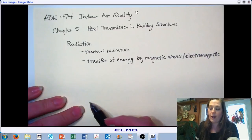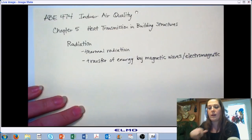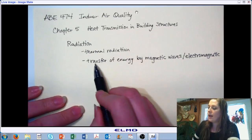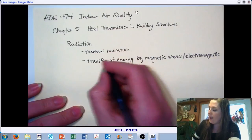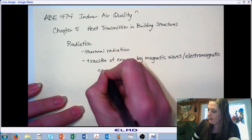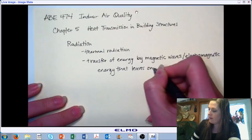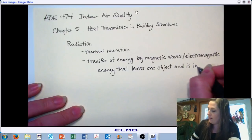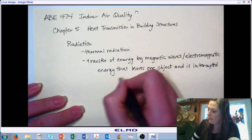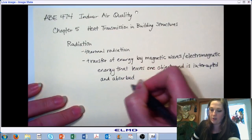We have radiation transfer that happens from the sun to our structure, from the atmosphere to our structure, from one structure to another structure, and from occupants to a structure. So there are a lot of different entities involved in radiation exchange, transferring energy by electromagnetic waves — energy leaving one surface and then intercepted and absorbed by another, resulting in an exchange of radiation.